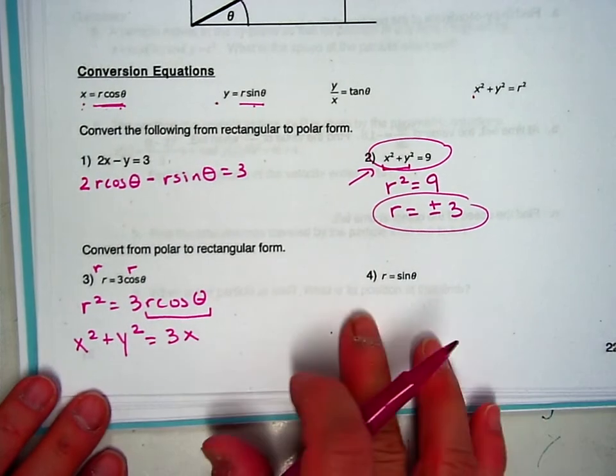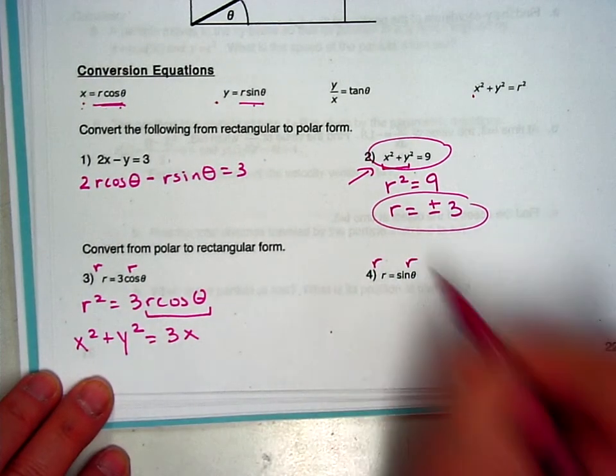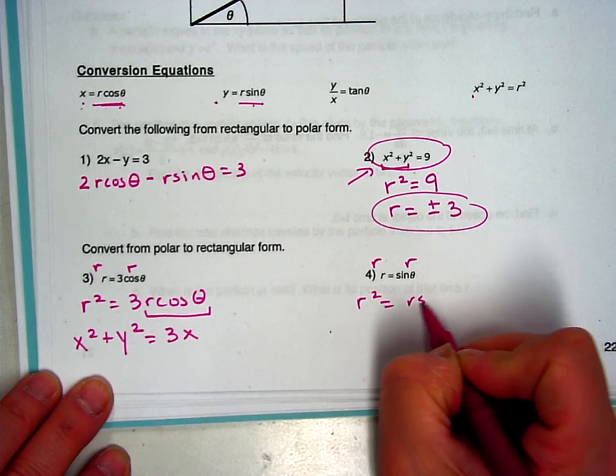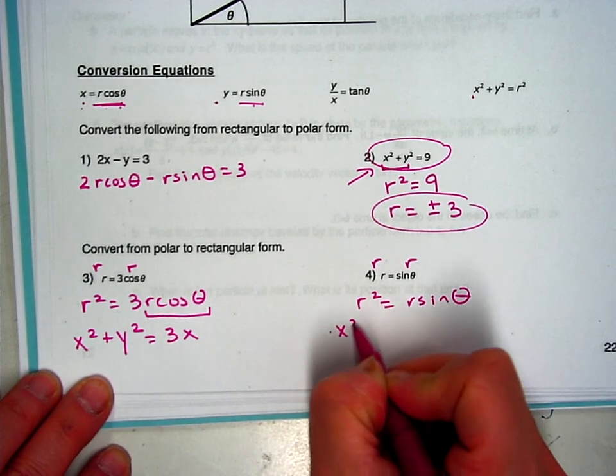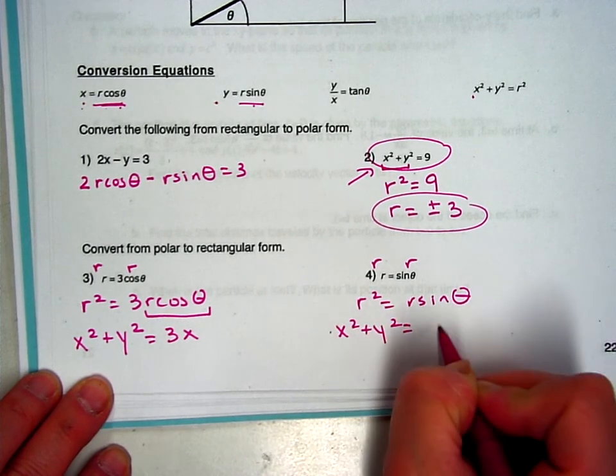And I can do the same thing on this side. I'm missing an r, so I'm going to go ahead and multiply both sides by r. So this is x squared plus y squared, and this will become y.